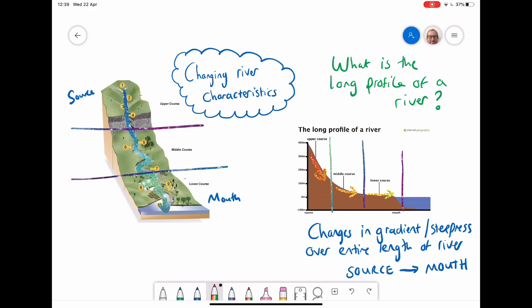These changes in gradient have an effect on the kind of processes that dominate, whether it's erosion, certain types of erosion or deposition. And I'm going to discuss that next.